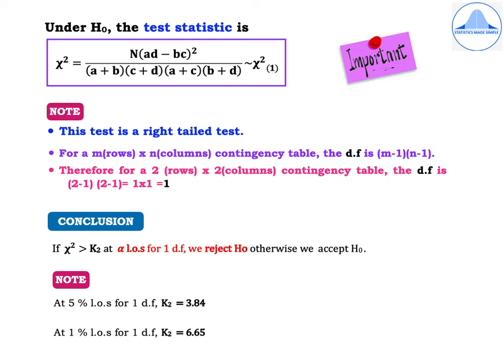For the conclusion, check if the calculated chi-square is greater than the critical value K2 at the alpha level of significance for 1 degree of freedom. If so, reject H0; otherwise, accept H0. At 5% level of significance with 1 degree of freedom, K2 is 3.84. At 1% level of significance with 1 degree of freedom, K2 is 6.65. These values can be memorized or looked up in statistical tables.